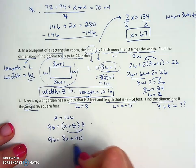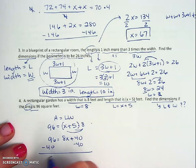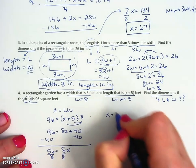I subtract 40 from both sides, 56 equals 8x, divide by 8, x equals 7.